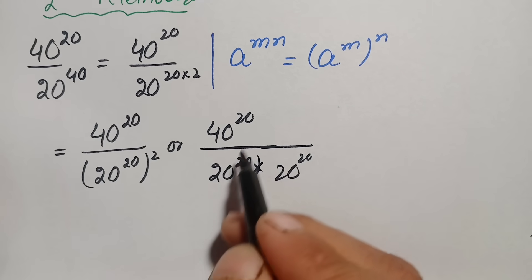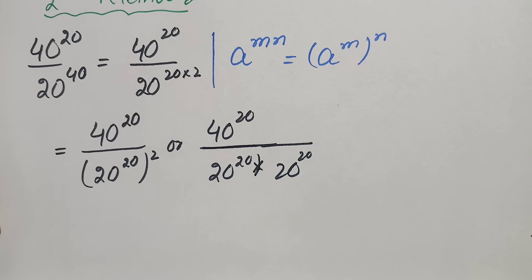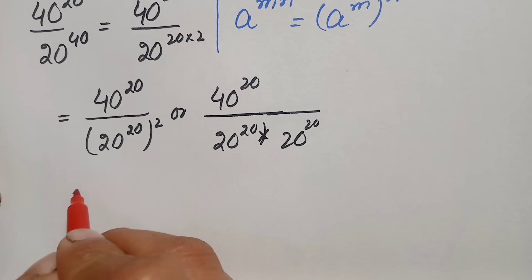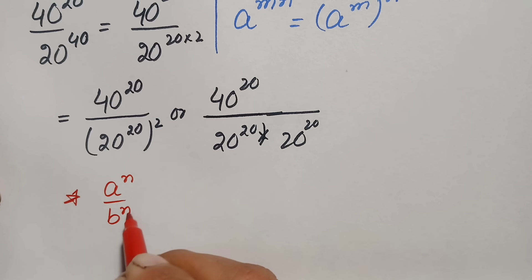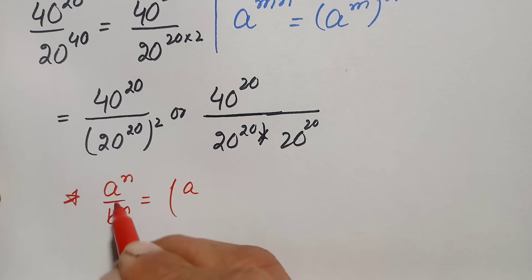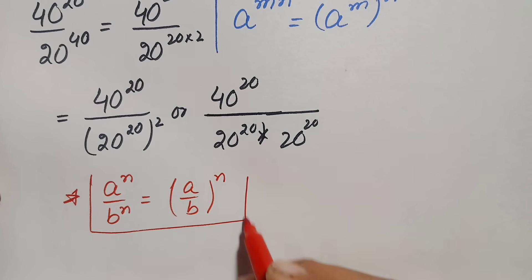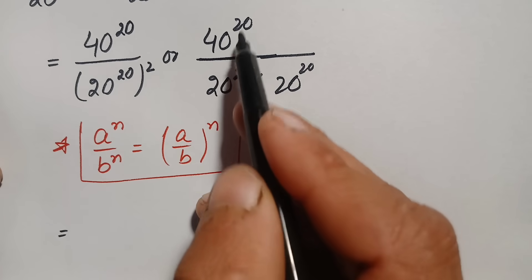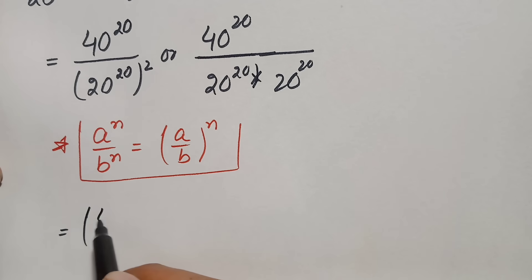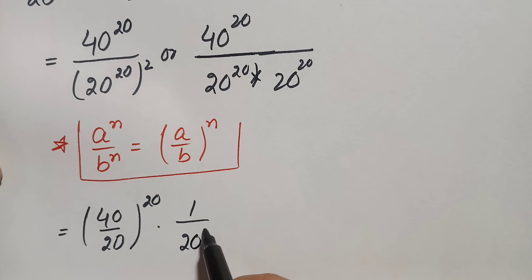The numerator and one factor in the denominator have the same power 20. Applying the identity a raised to power n divided by b raised to power n equals (a/b) raised to power n, we divide 40 by 20 and take the power 20 common, giving (40/20) raised to power 20 times 1 over 20 raised to power 20.